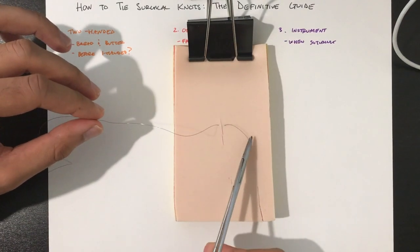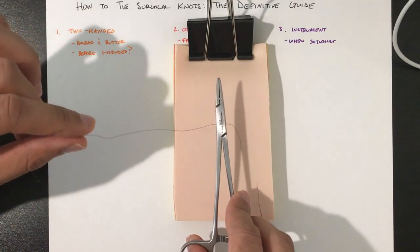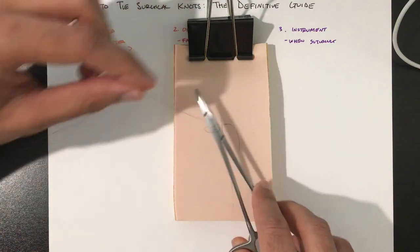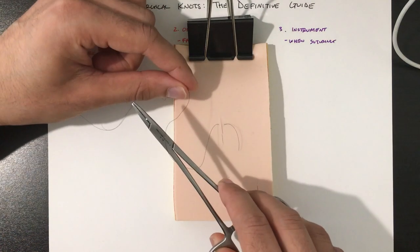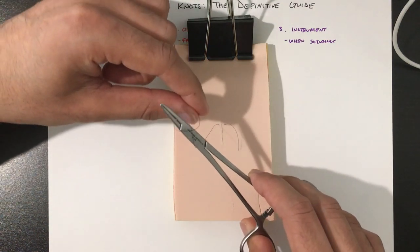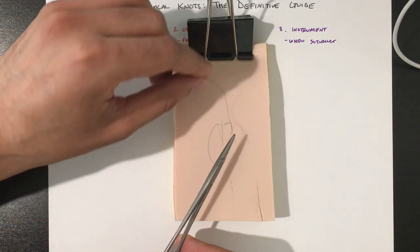To do the instrument tie, lay your needle driver in the center between both, then wrap the suture from outside in, like so. If we're doing a surgeon's knot, we would do it twice for the first one. Grab the short end and pull.